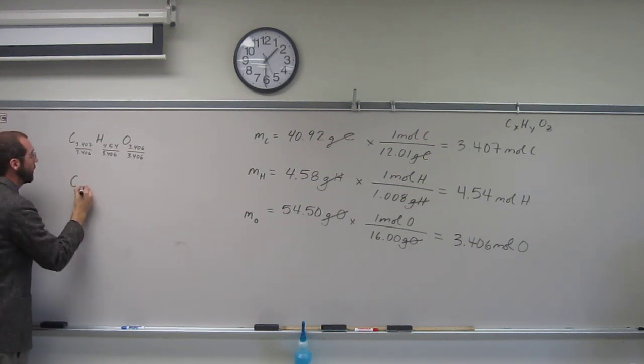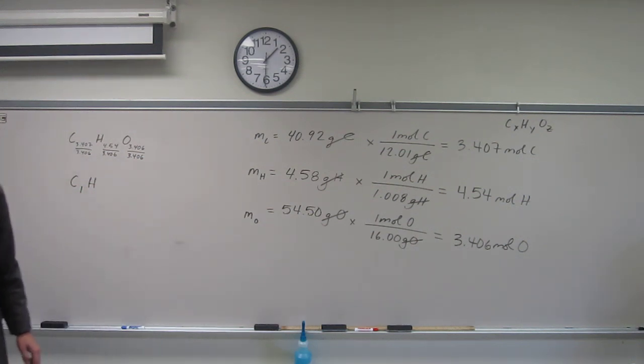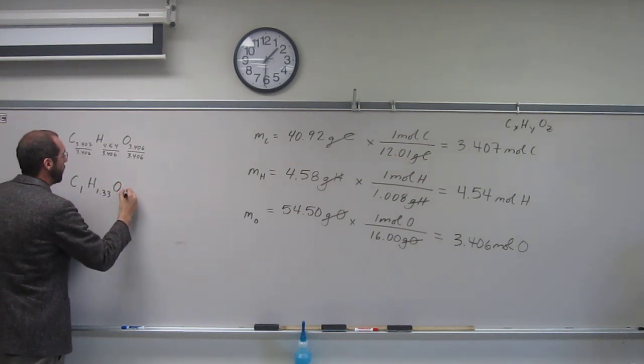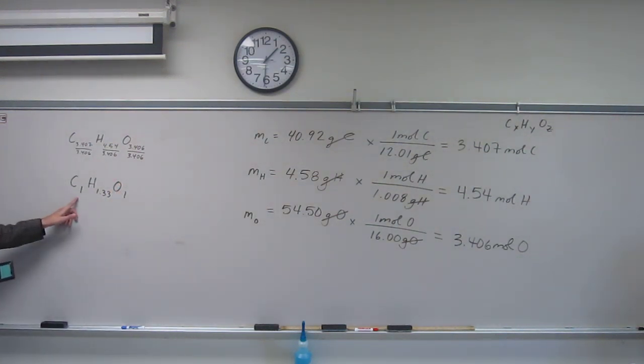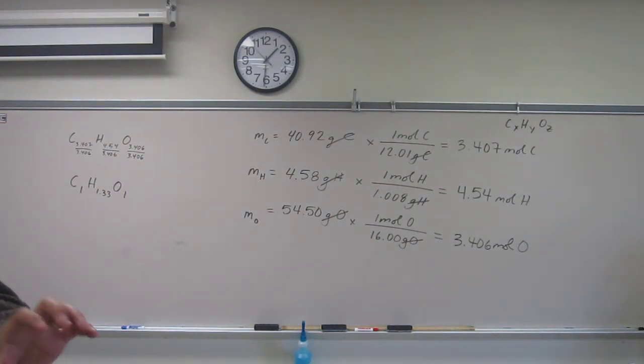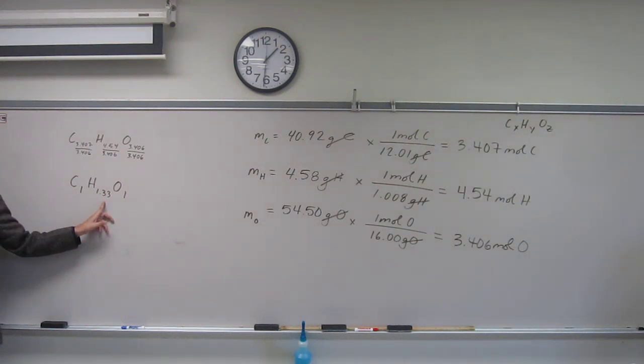So it's going to be C1, H something, let's figure that one out. 4.54 divided by 3.406, so 1.33 and O, 1. I'm just putting those ones there as a placeholder for right now. Remember, you don't put ones as subscripts. So in my final answer, I wouldn't put those. But hopefully you guys see that this is not an integer, 1.33.